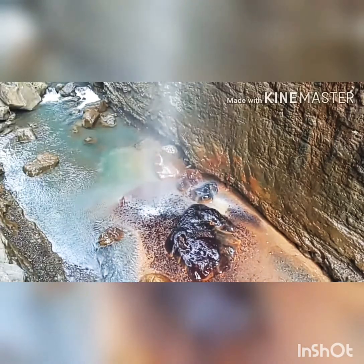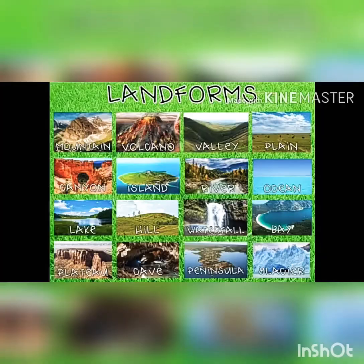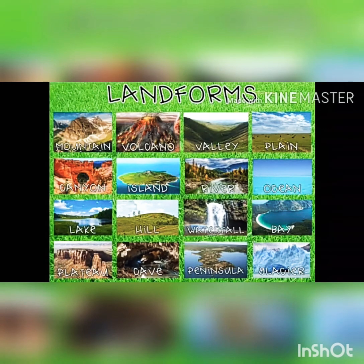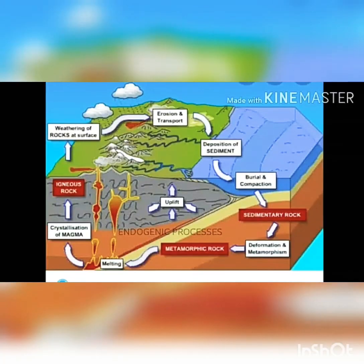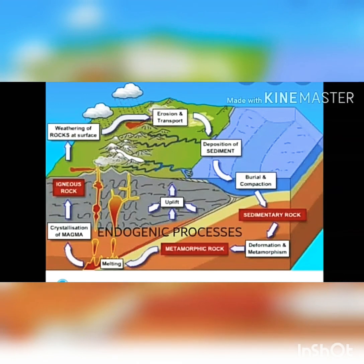In the earlier class we have learned that the surface of the earth is not the same everywhere. The earth has an infinite variety of landforms such as mountains, plateaus, plains etc. These landforms are the result of two processes, namely the endogenic process and the exogenic process.